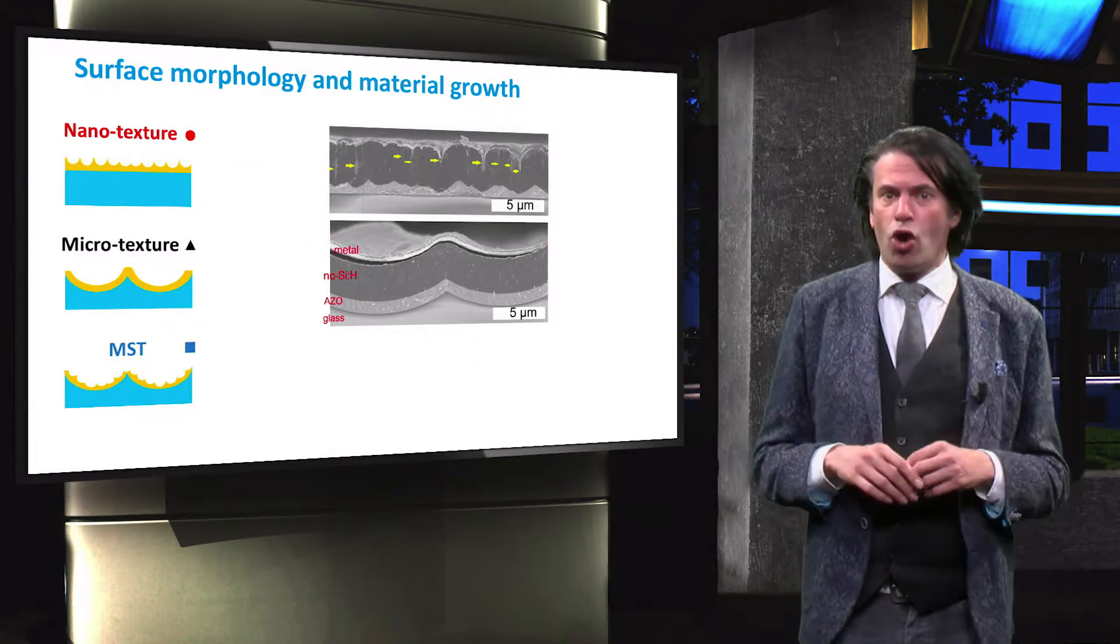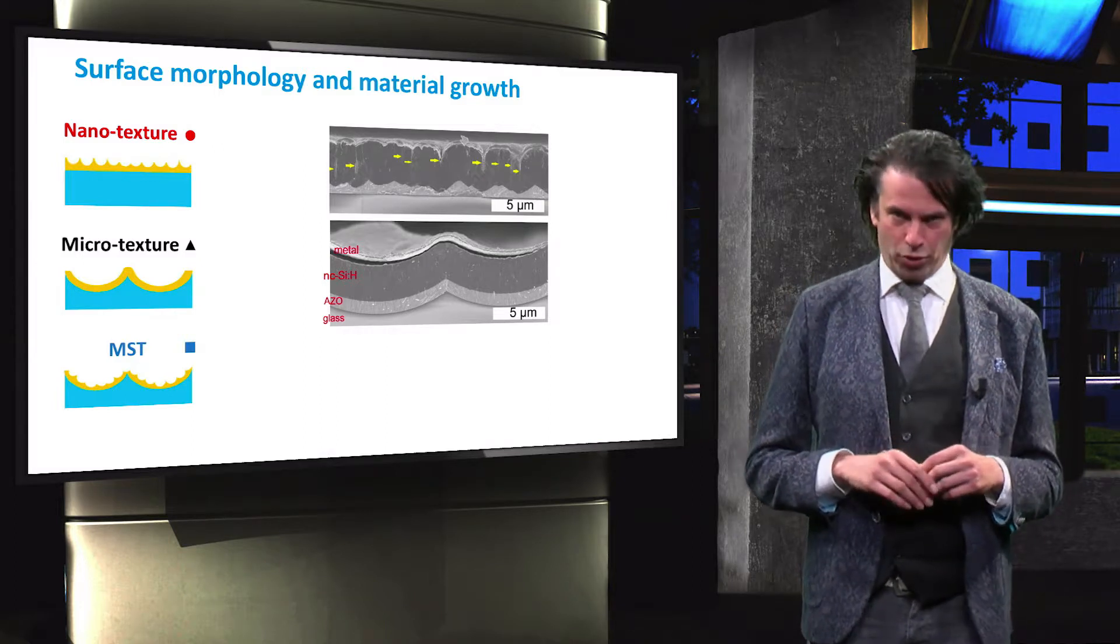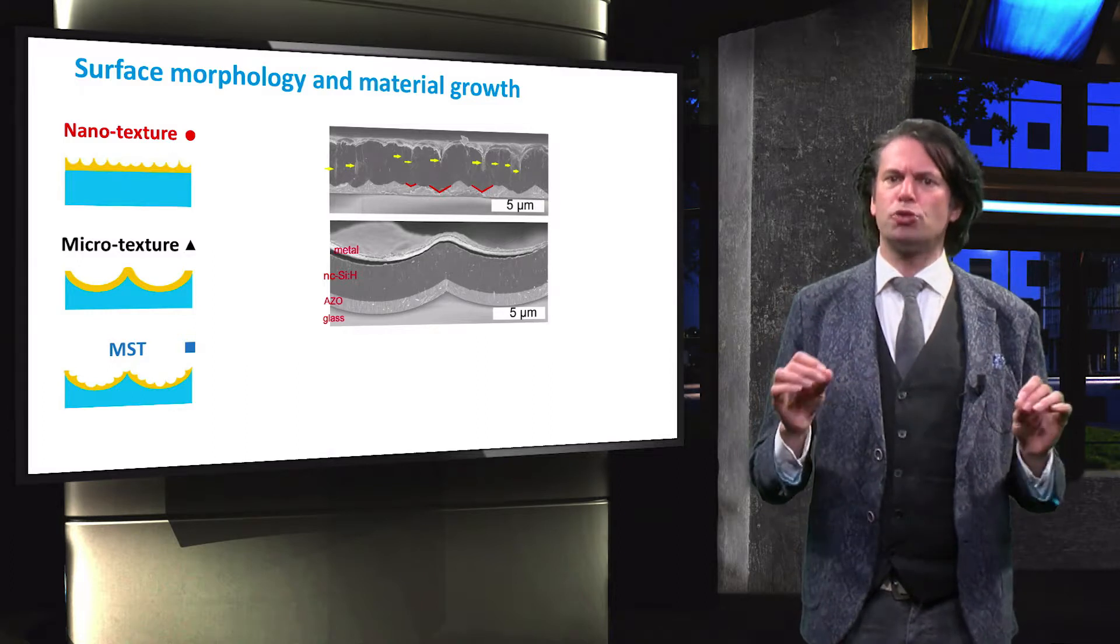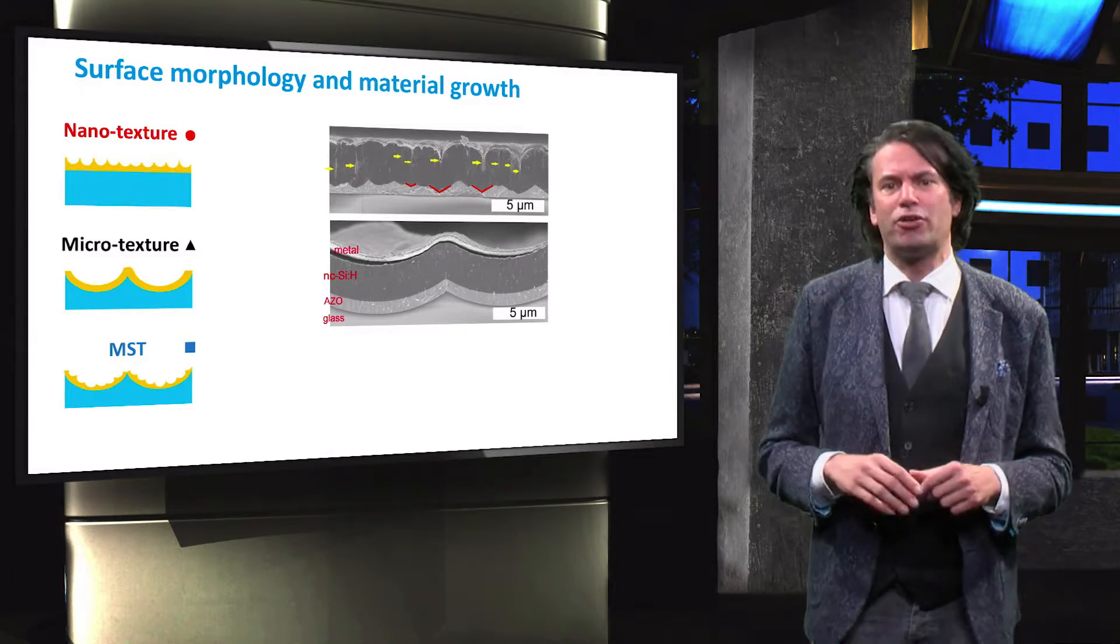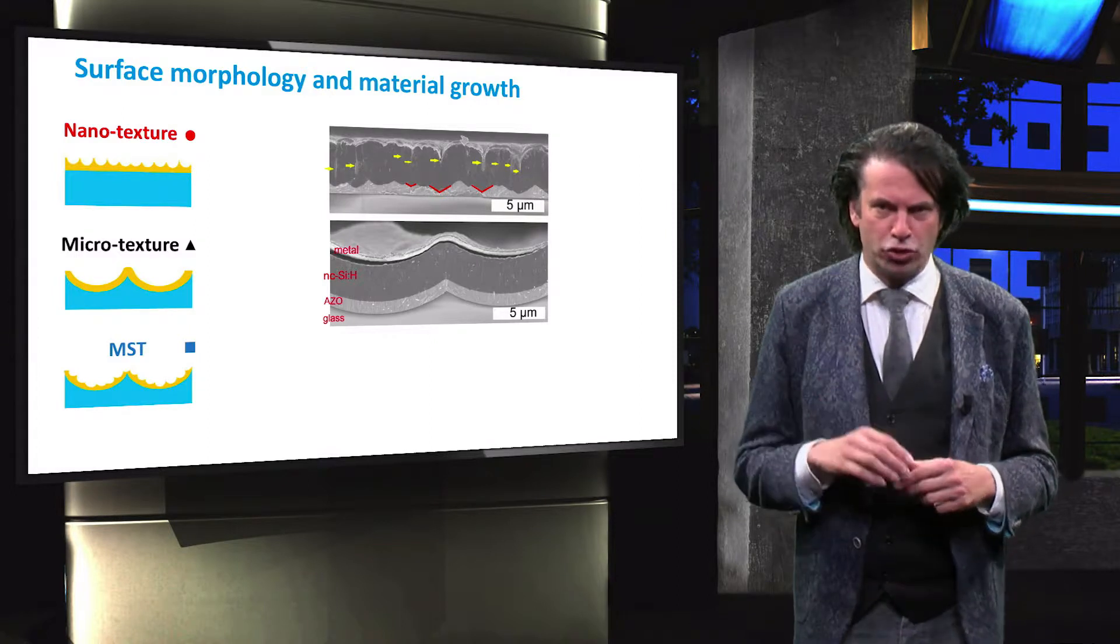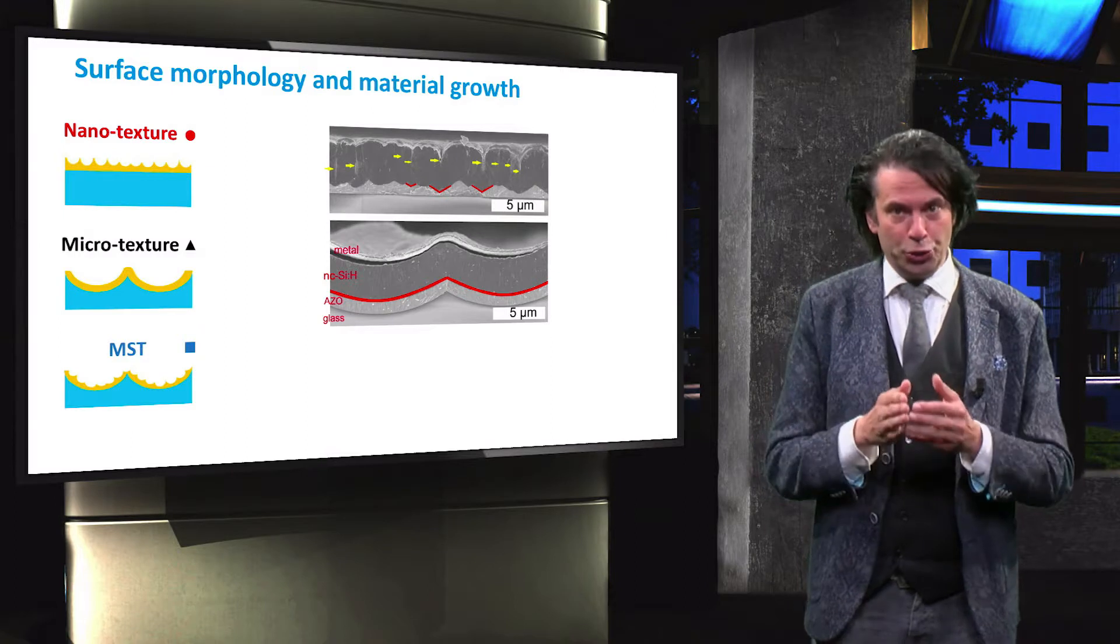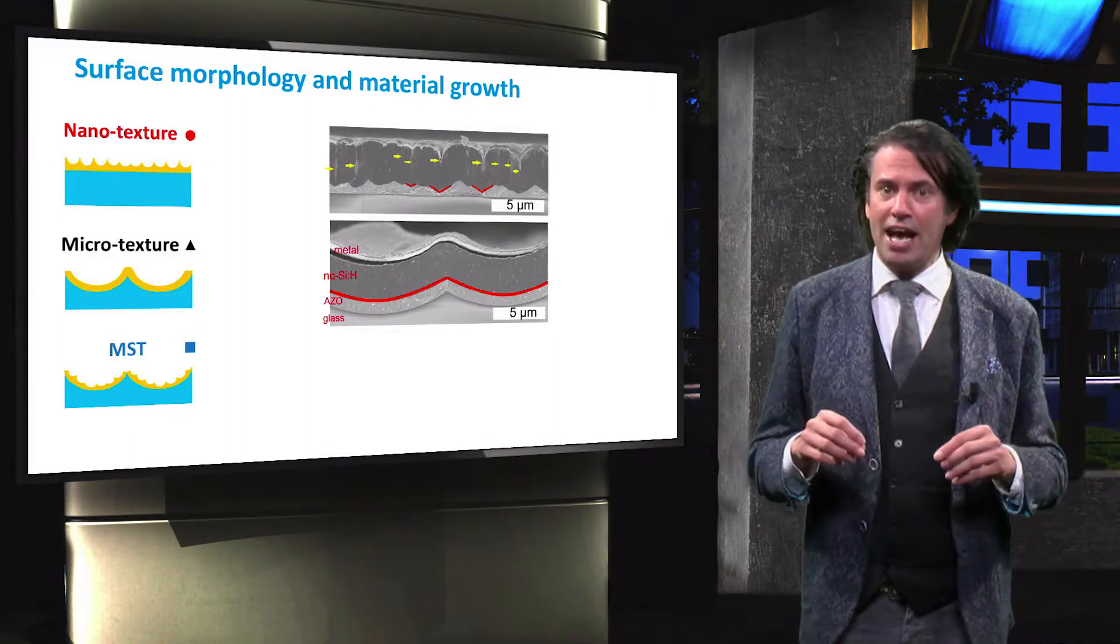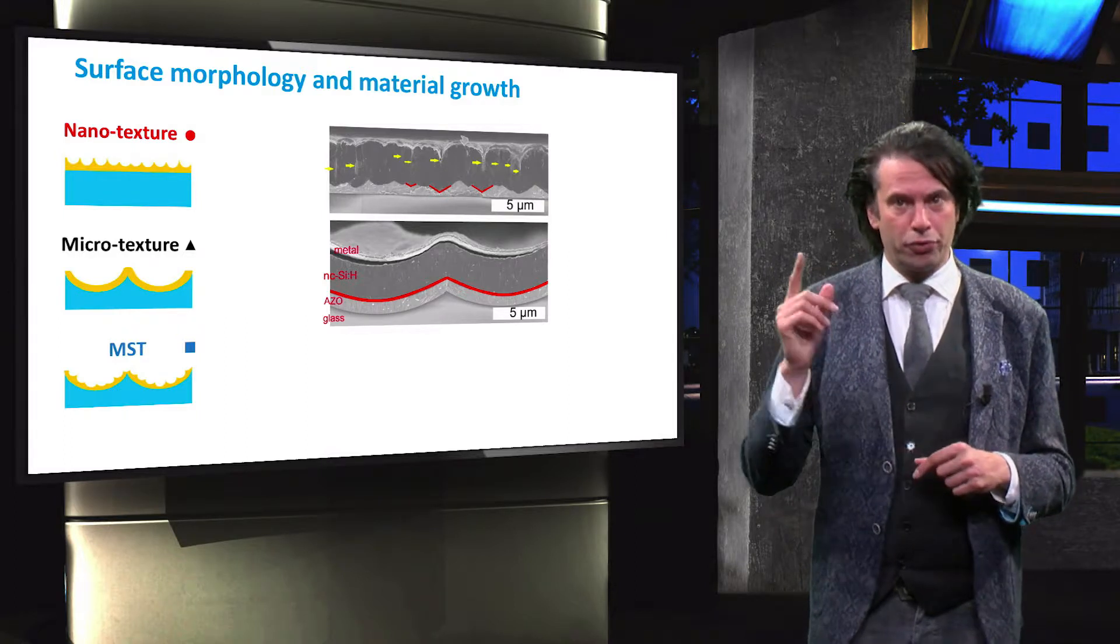The cracks, or defective filaments, are indicated by the yellow arrows. We can clearly see that the cracks correspond to valleys of the sharp V-shaped nanotexture features of the TCO substrate. The larger, smooth, U-shaped microtexture features do not have these sharp valleys, and as a consequence there appear no large cracks running through the material.